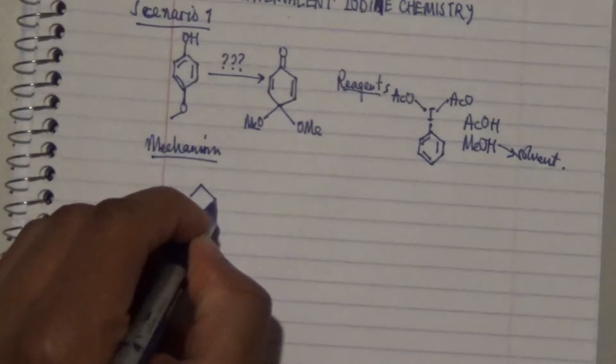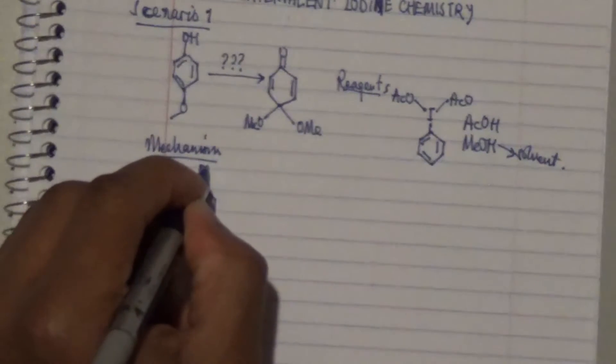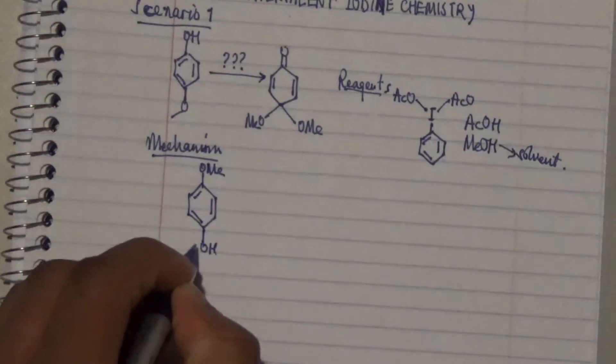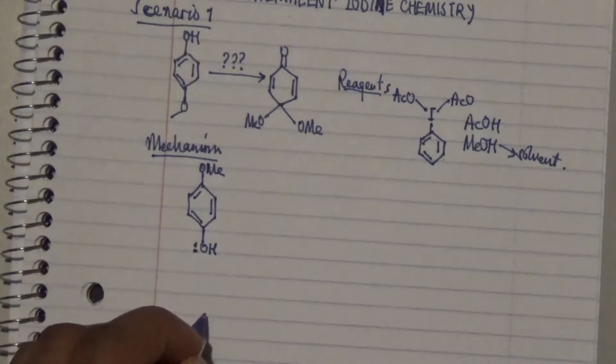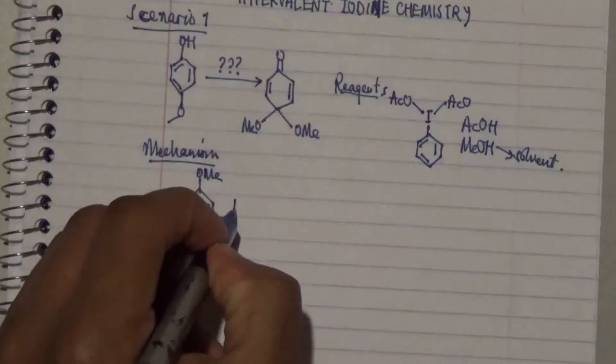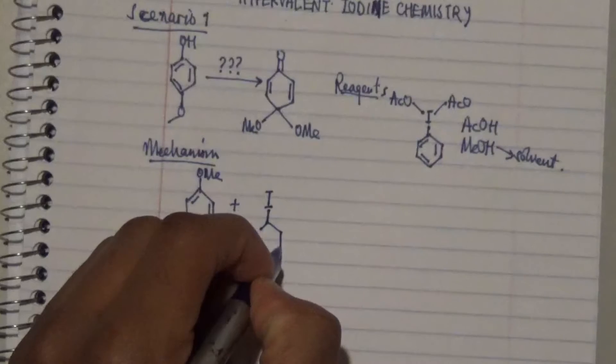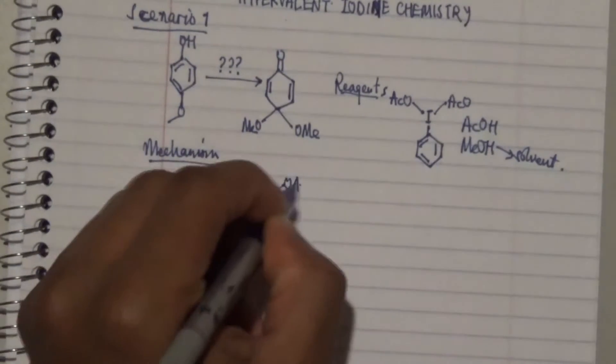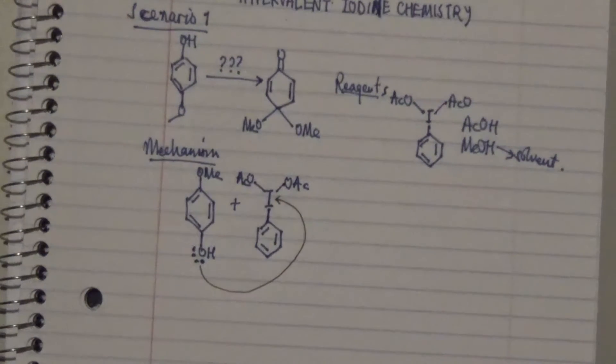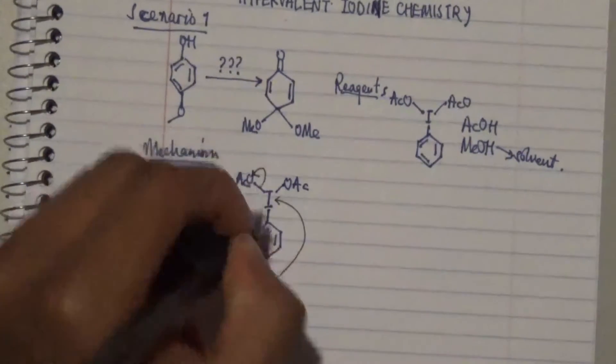We're assuming here that we have the main reagent at the top. This oxygen has lone pairs, and this lone pair will actually undergo a nucleophilic attack on the iodide.